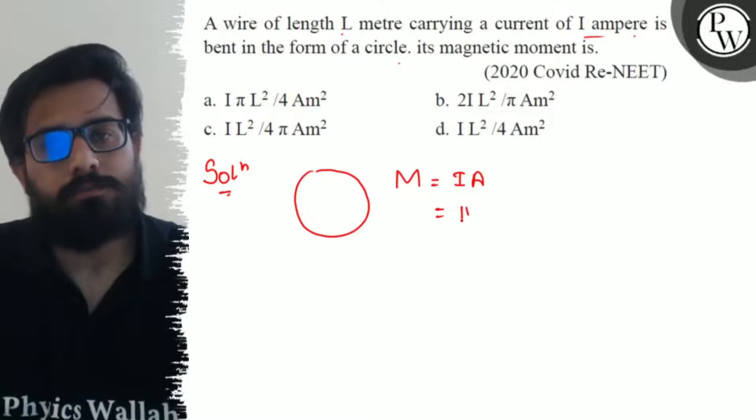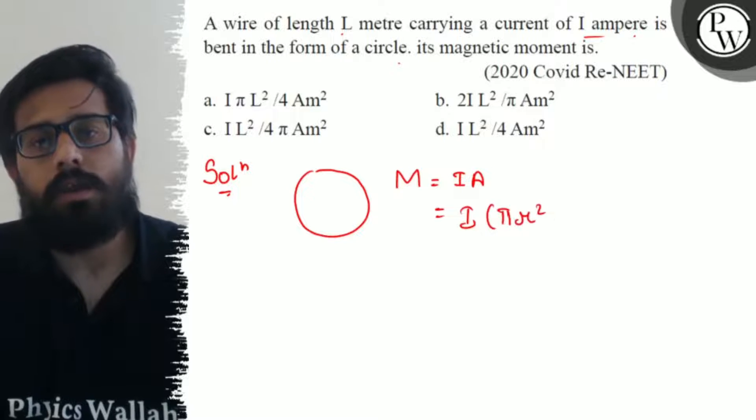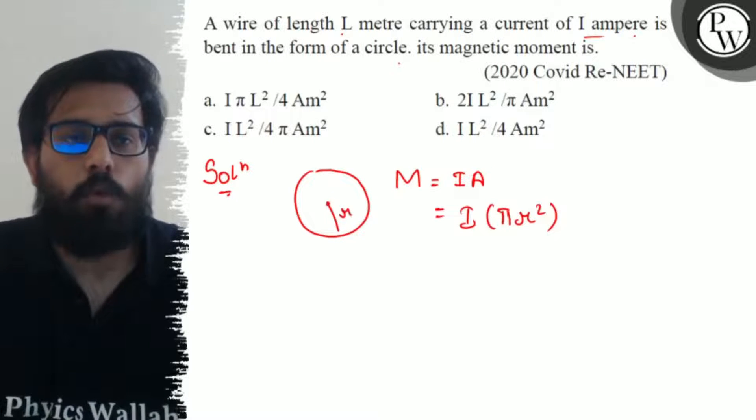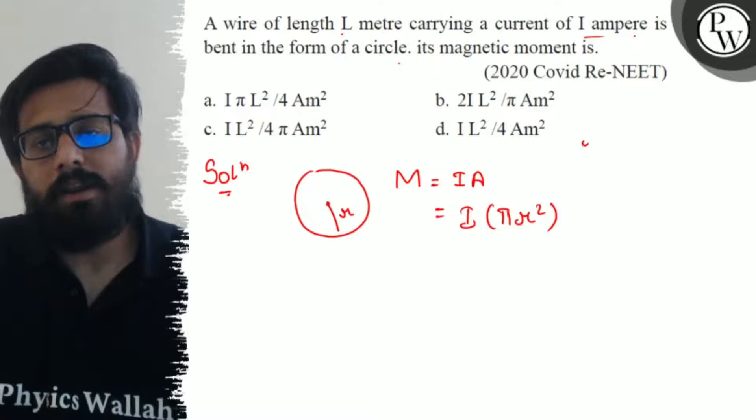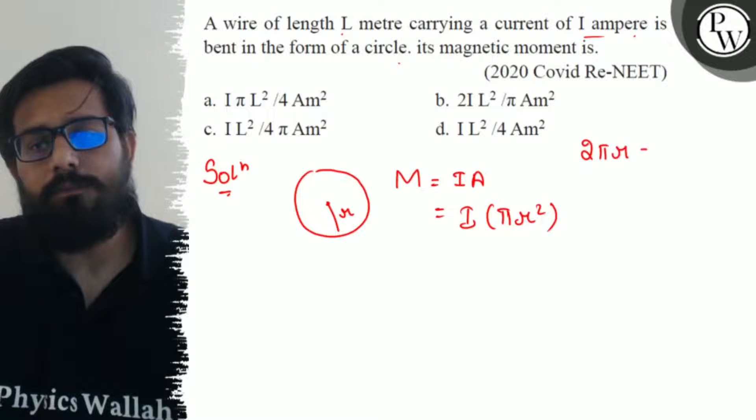So I into A. What about the area? π r², where r is the radius of the loop. Now r can be written as, the circumference 2πr can be written as L, so r can be written as L upon 2π.